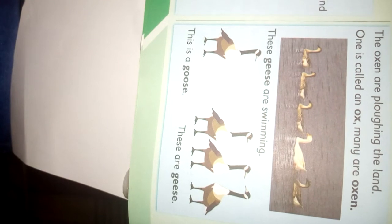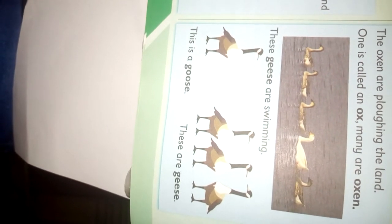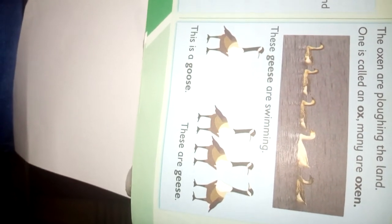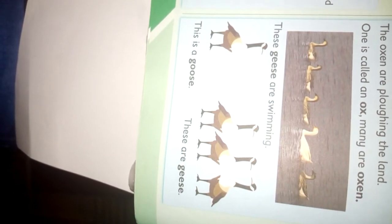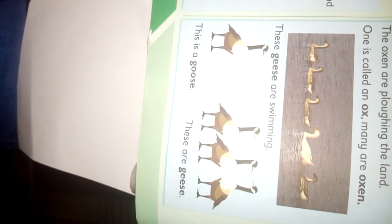There we have the geese. Look at the sentence: 'These geese are swimming.' Because there are many, and one is called a goose.